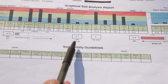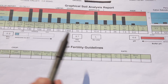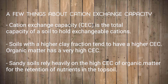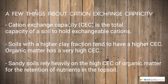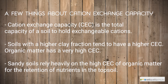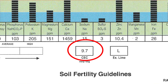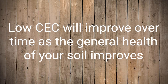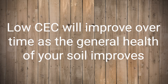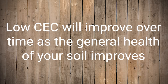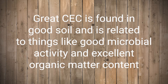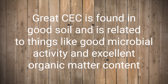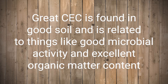Cation exchange capacity, or CEC, is one of the more important numbers on the report. This measures the ability of the soil to hold onto and use nutrients that are present in the soil. Ideally, this number would be 20 or more. If it is lower, it will improve over time as you improve the overall soil health and quality. Good CEC is found where soil health is excellent and is related to factors such as good microbial activity and organic matter content.